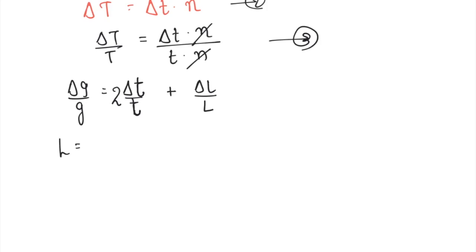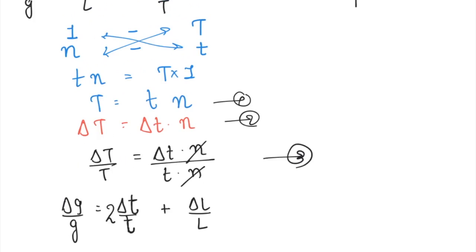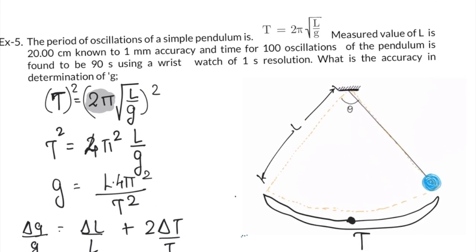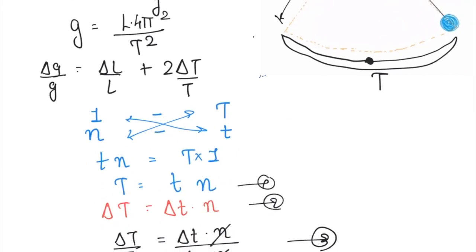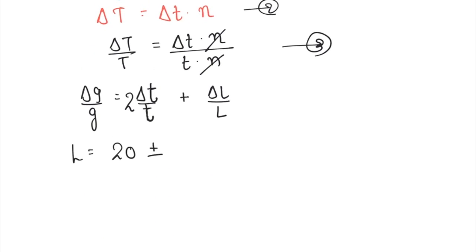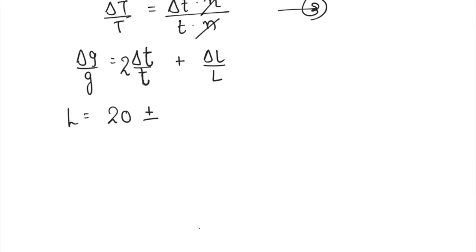Now, L is given as 20 centimeters, corrected to what was the resolution? The resolution was 1 mm accuracy. So delta L was 1 mm. I can say plus minus delta L is 1 mm, which is nothing but 0.1 centimeter.